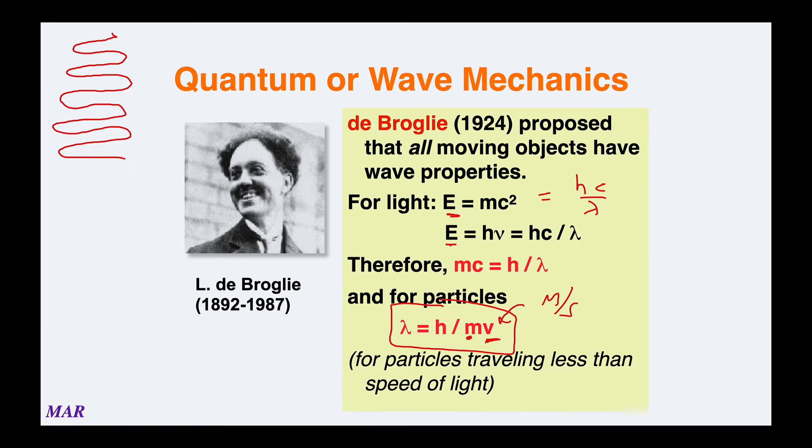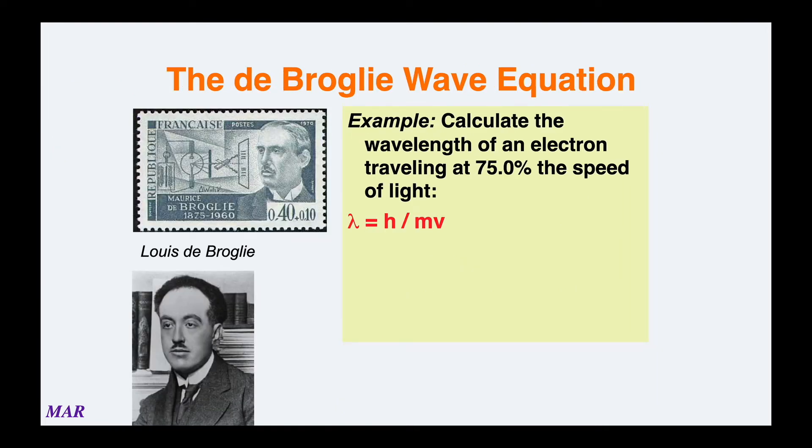This is an example of how this works out. Let's calculate the wavelength of an electron traveling at 75% the speed of light. We're going to use λ = h/mv.